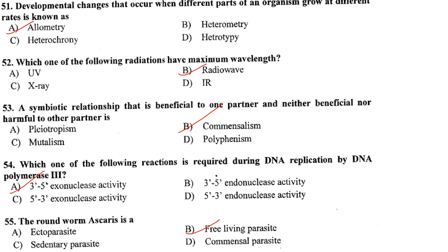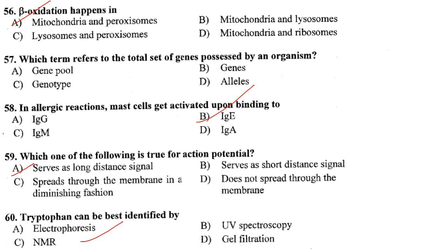Which reaction is performed during DNA replication by DNA polymerase III? It is the 3' to 5' exonuclease activity, also known as proofreading activity. The roundworm Ascaris is a free-living parasite — answer is option B.